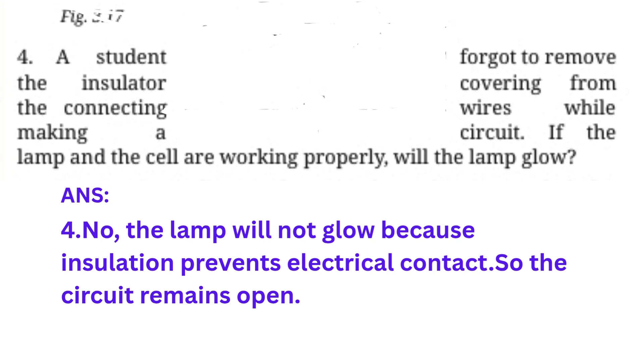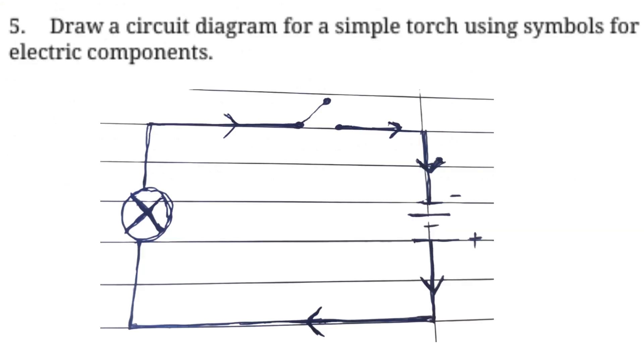Question number five: Draw the circuit diagram for a simple torch using symbols for electric components. We use a battery, a lamp, and a switch to represent the circuit.